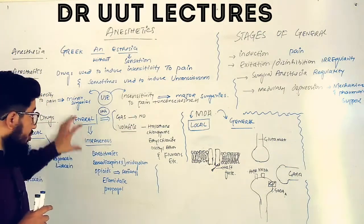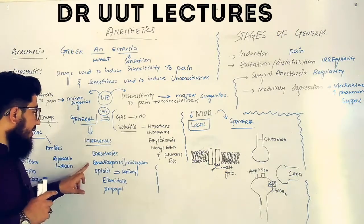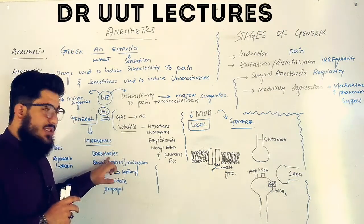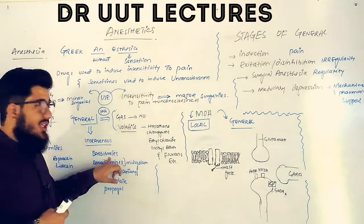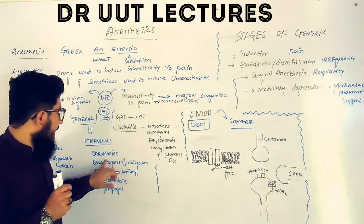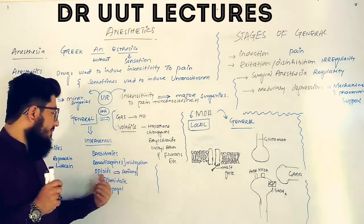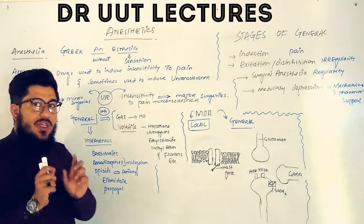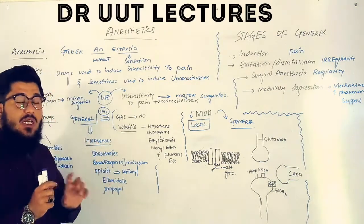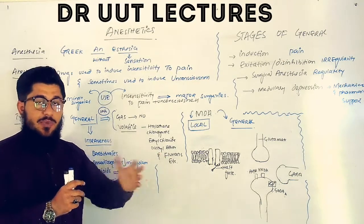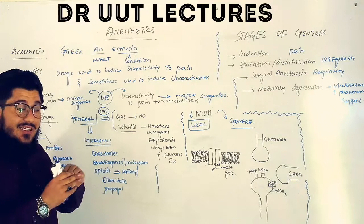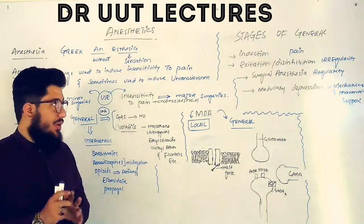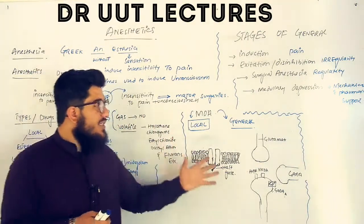The intravenous general anesthetics include barbiturates, benzodiazepines, opiates, etomidate, propofol, etc. The barbiturate used for general anesthesia is thiopental; the benzodiazepine is midazolam; and the opioid is fentanyl. An important point: anesthesia is first obtained by IV administration, and then it is maintained using inhalational drugs.